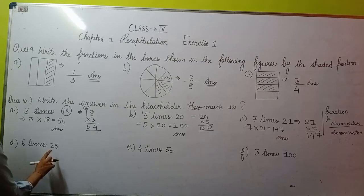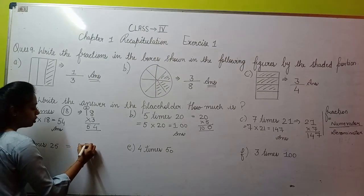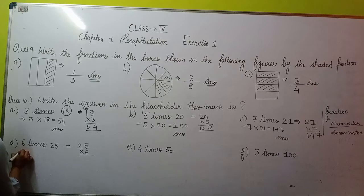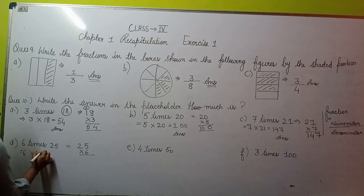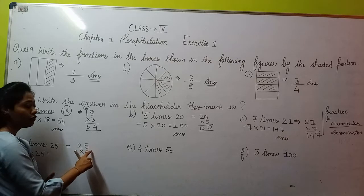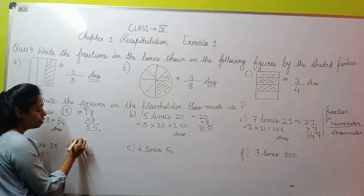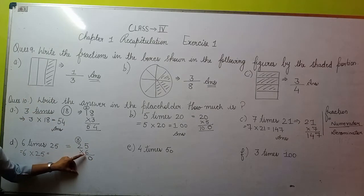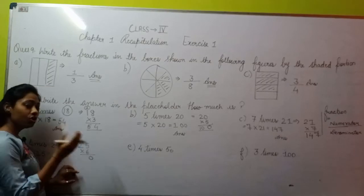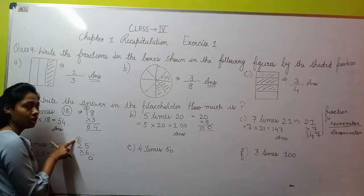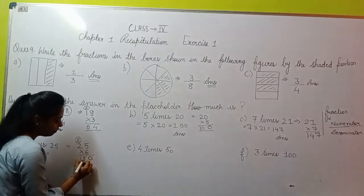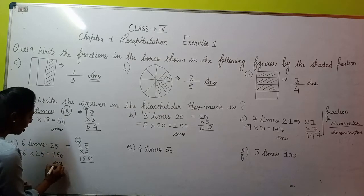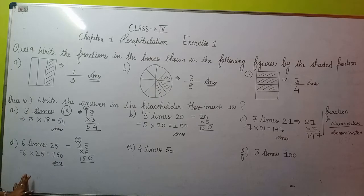Similarly, moving to part D. Part D given is 6 times 25. You can write it as 25 multiply by 6, and the times sign becomes multiplication sign. So 6 multiply by 25. Let's multiply: 5 sixes are 30. Put 3 in carry forward and 0 here. 2 times 6—2 into 6 is 2 sixes are 12, plus 3 is 15. That is 150. This is your D part's answer: 150.